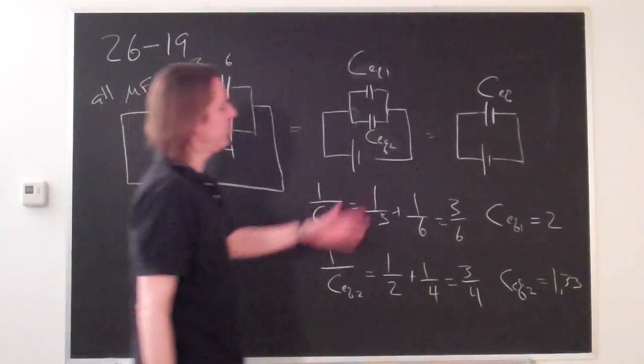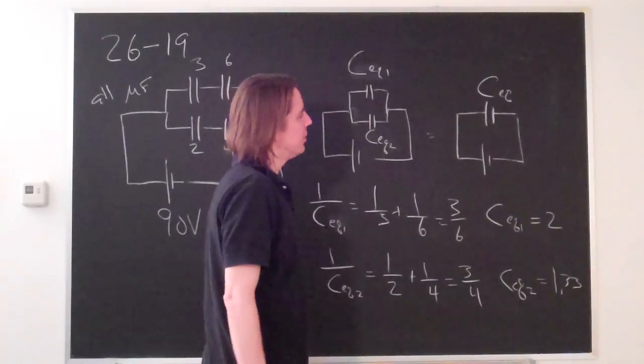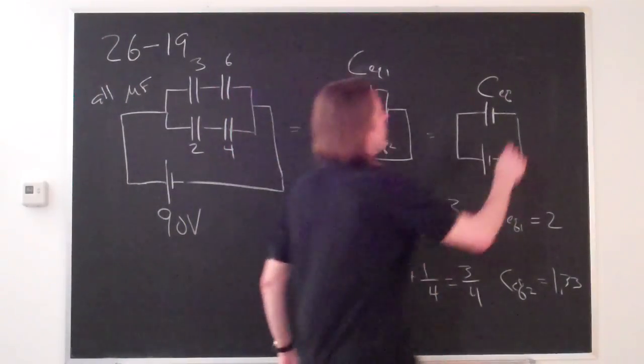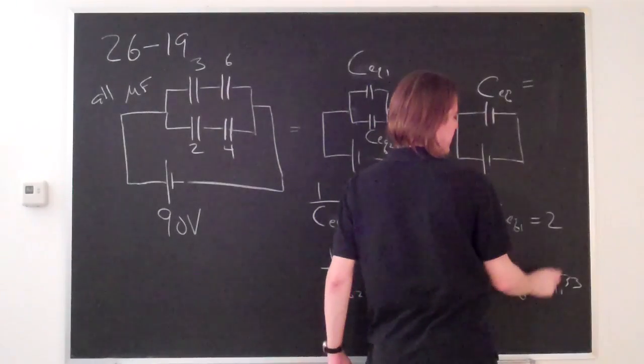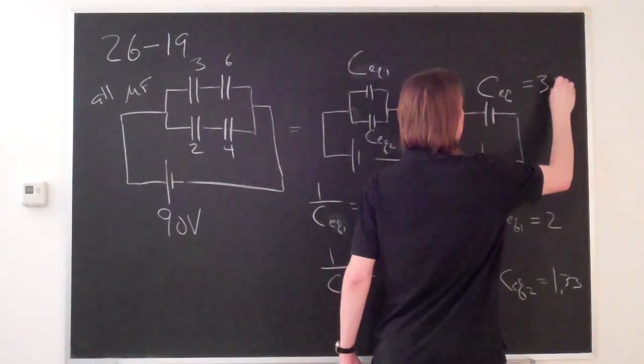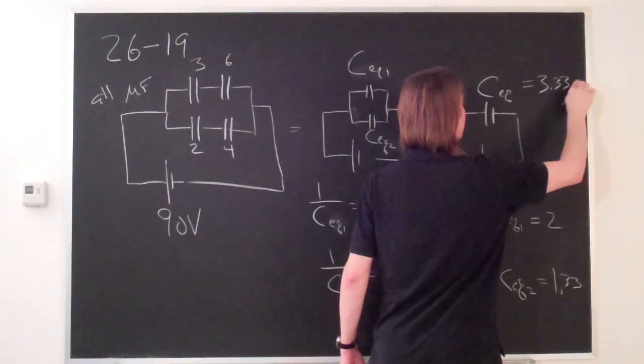And then C_eq, the total equivalent capacitance, is these two in parallel. When they're in parallel you just add them, so the total equivalent capacitance, the answer to part A, is 3.33 microfarads.